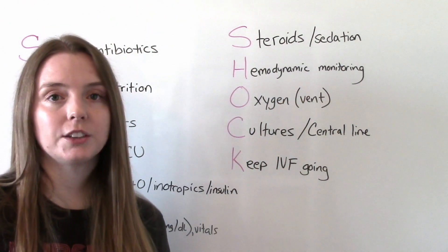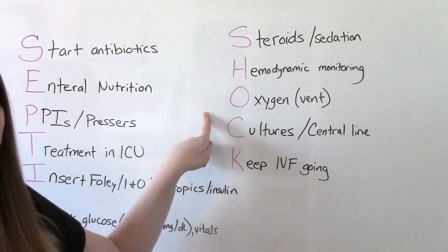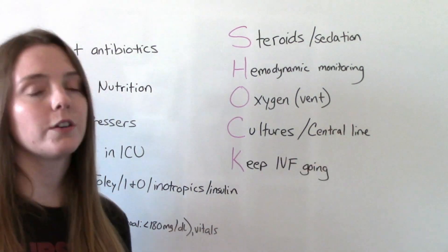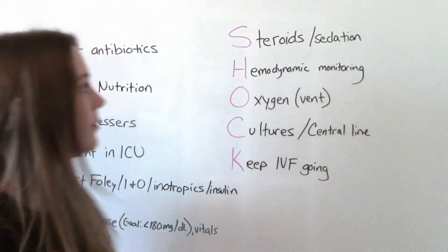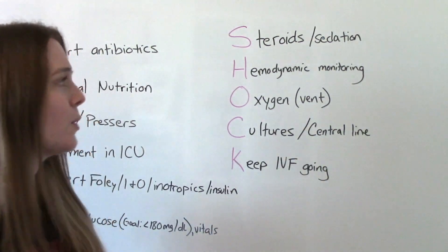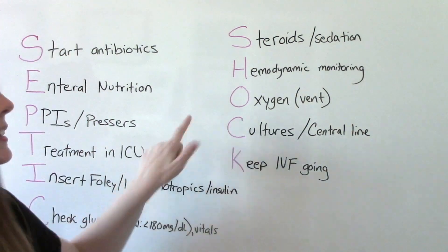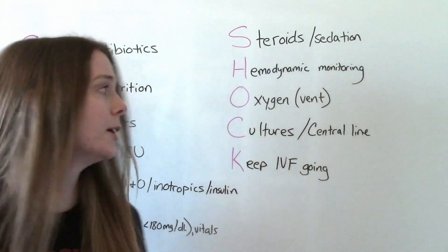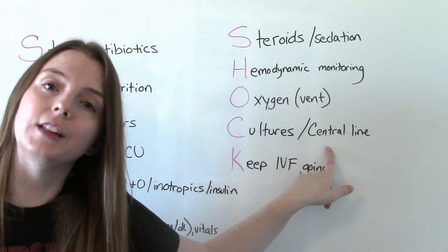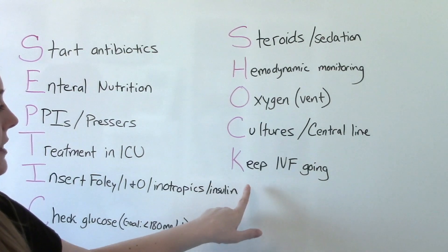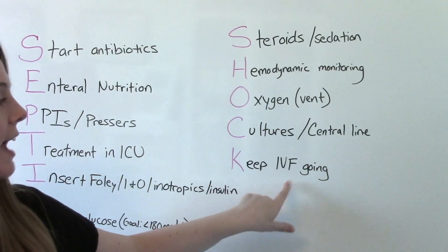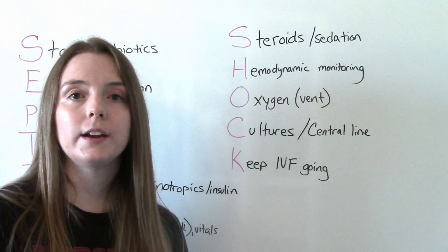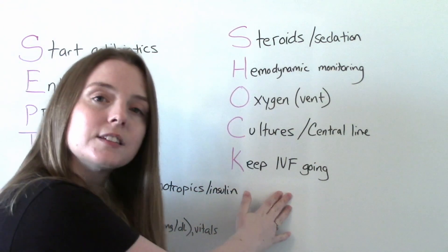H is for hemodynamic monitoring, and keeping up on all of our labs. O is for oxygen — some of these patients are going to need oxygen and may need to be on mechanical ventilation, which requires sedation. That covers both S for sedation and O for oxygen. C is for cultures — blood cultures to identify exactly what's causing the infection so we can treat it better. They'll definitely need a central line. And K is for keeping IV fluids going, because giving IV fluids is one way to help bring up that low blood pressure in shock.